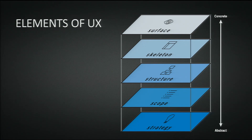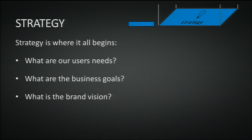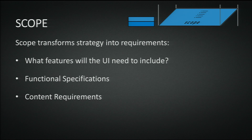To explain how we do these building blocks, we use the elements of the user experience — this is the way we structure our work to get from the abstract to the concrete. The abstract level we start with is the strategy, which is the foundation: what do users need, what are the business goals, and what is the overall brand vision? The next level is the scope, where we transform strategy into requirements: what UI features will we include, what are the functional specifications, and what content is required?